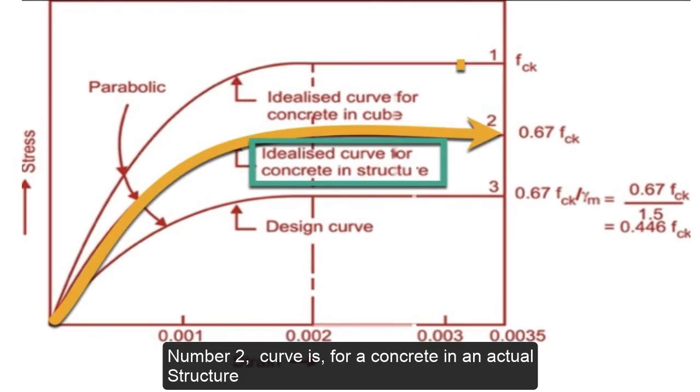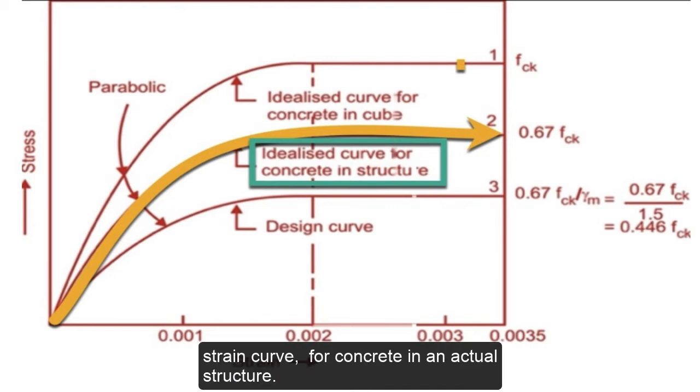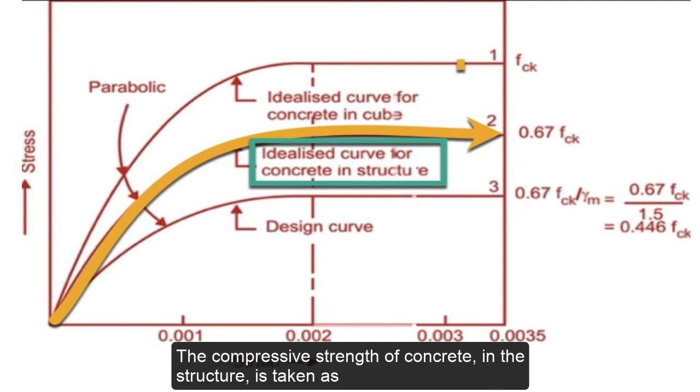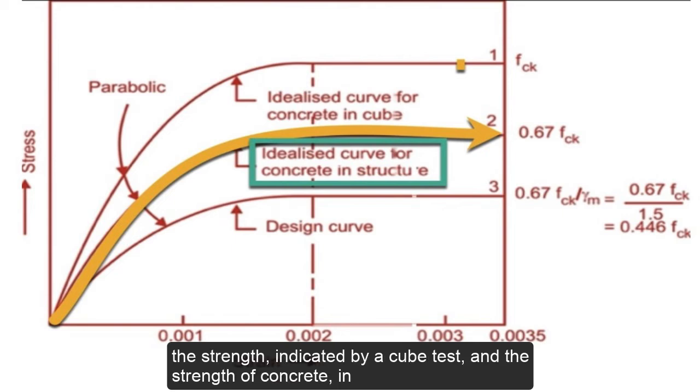Curve number two is for concrete in an actual structure. As shown in the figure, IS 456-2000 specifies the idealized stress-strain curve for concrete in an actual structure. The compressive strength of concrete in the structure is taken as 0.67 times the characteristic strength. The 0.67 factor is introduced to account for the difference in the strength indicated by a cube test and the strength of concrete in the actual structure.